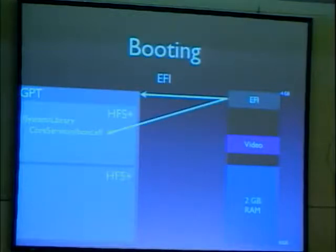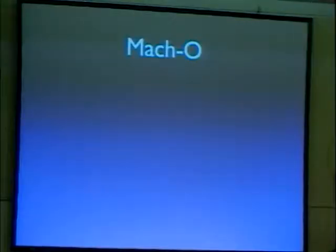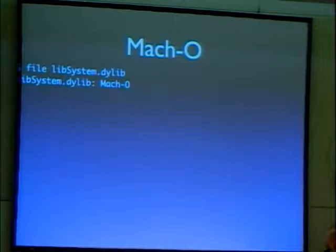Kernel extensions are loaded by going through all objects in /System/Library/Extensions and matching them against detected hardware. If neither the kernel, hardware, nor drivers on disk have changed since the last boot, the kernel cache is loaded instead — this is the kernel and a set of necessary kexts pre-linked into a flat image. It's also interesting that the kernel file is called 'mach_kernel' but of course it's XNU, not Mach. Instead of ELF used by virtually every other Unix-like system, Mac OS X uses Mach-O.